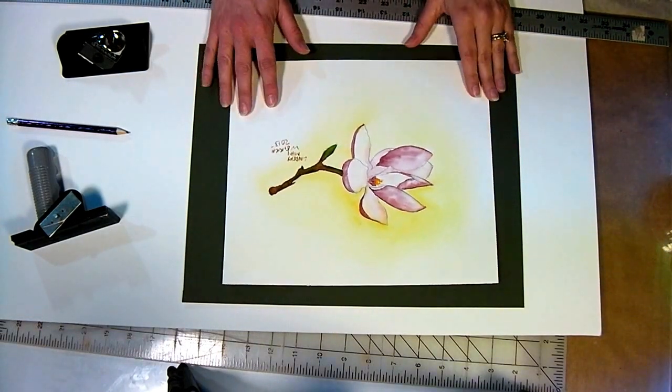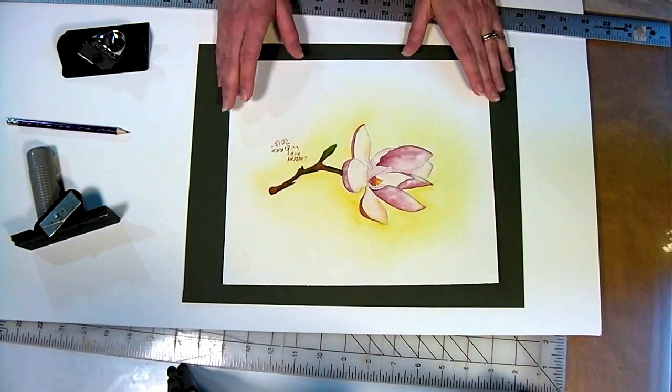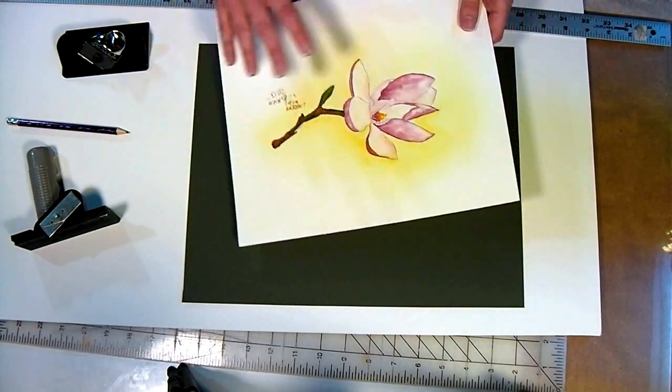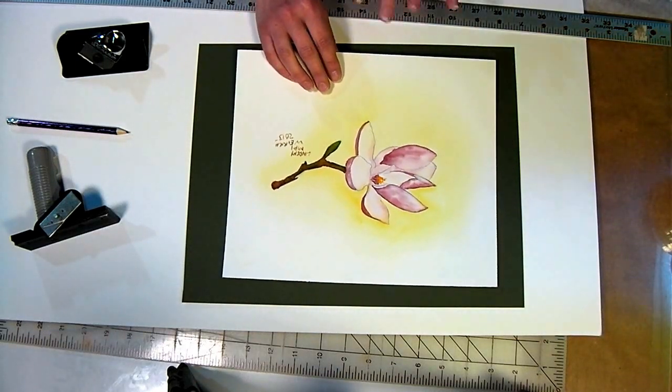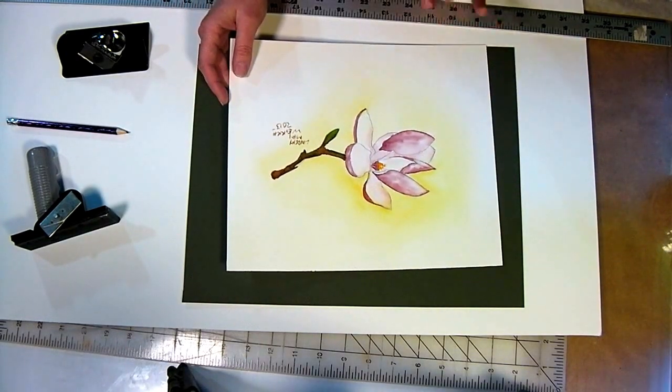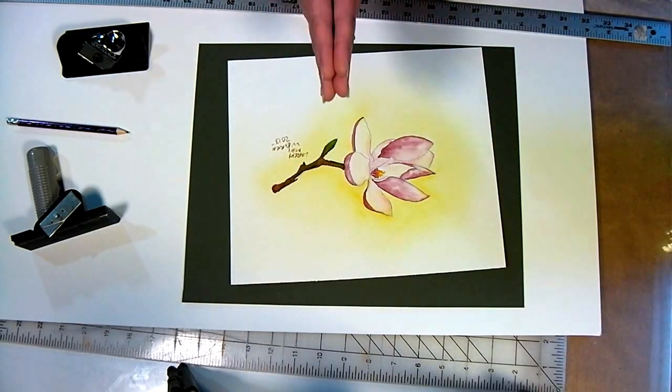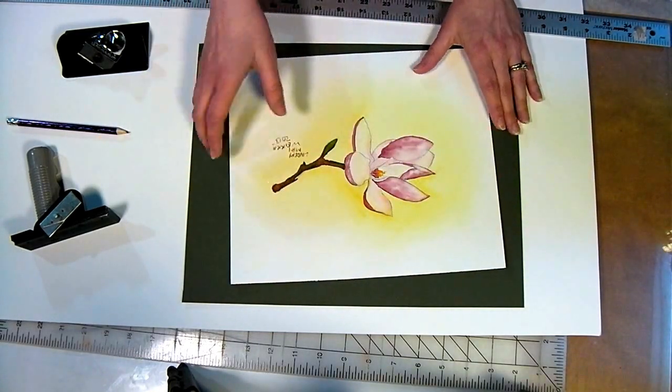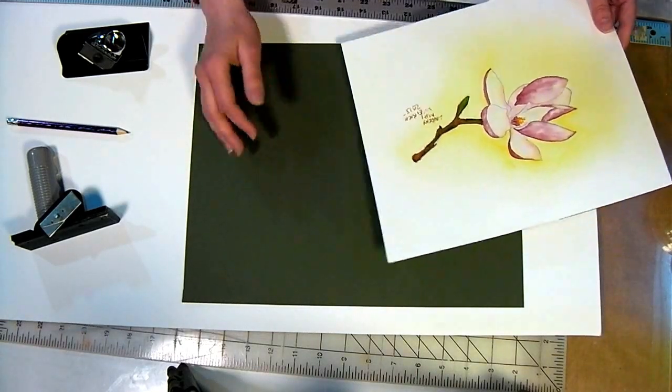Anytime that you're framing artwork that's done on paper or photograph, any work on paper, you want to have a mat that separates the paper from the glass. That way if there's any humidity or condensation on the glass, the painting won't stick to the glass and become damaged. If you ever found an old painting that had the picture stuck to the glass, it's because of condensation, so that's why we use a picture frame mat. It also adds to the beauty of the piece.